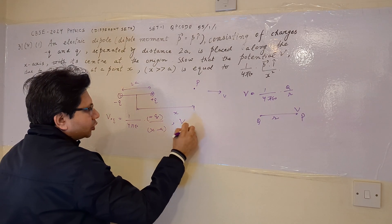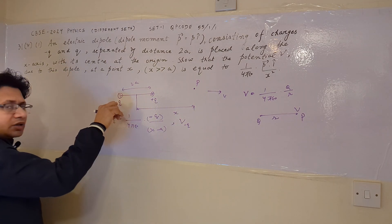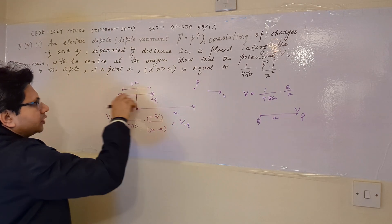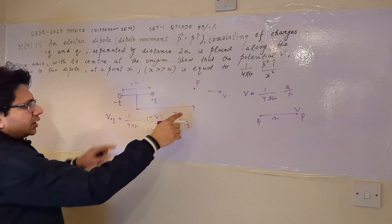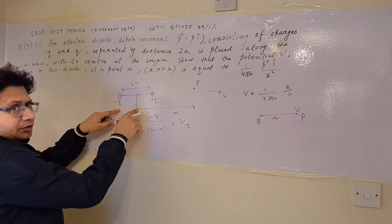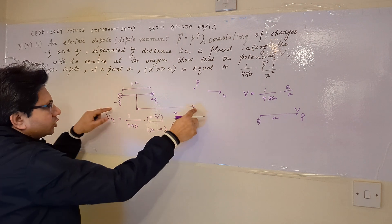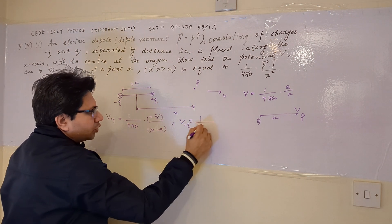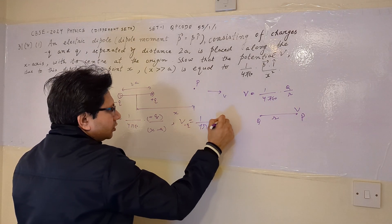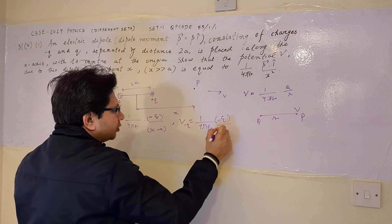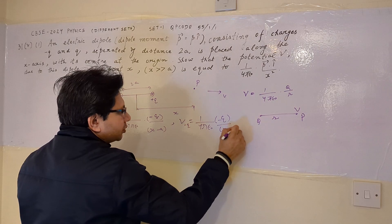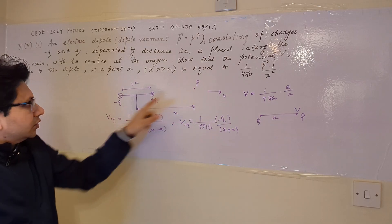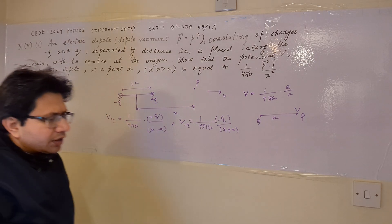Similarly, we calculate the potential at point P due to the negative charge. The distance of point P from the negative charge is x plus a, so this potential is 1 upon 4 pi epsilon naught times (minus q) upon (x plus a). This is the potential at point P due to the negative charge.